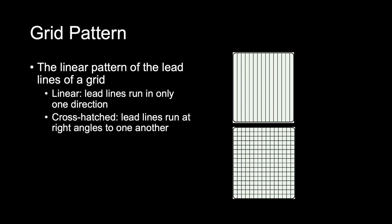Applications are limited with a crossed grid because the x-ray tube cannot be angled in any direction without producing grid cutoff, which is absorption of the transmitted x-rays. Grid cutoff, which is undesirable, will be discussed later in this chapter.